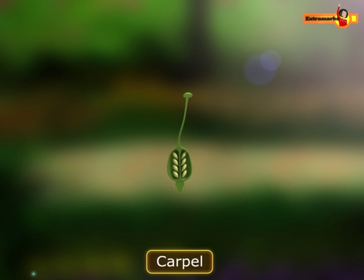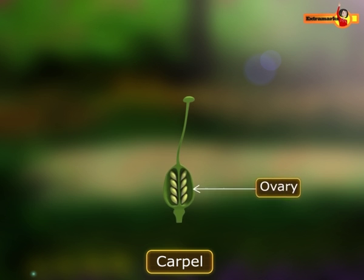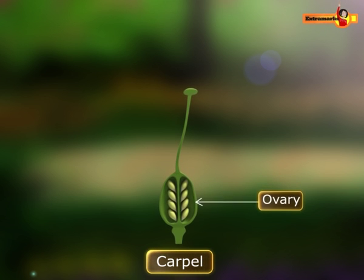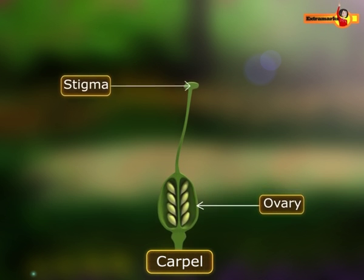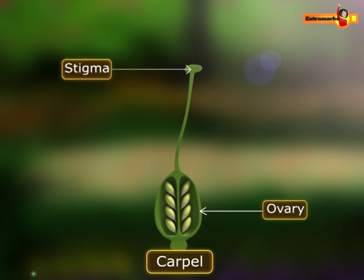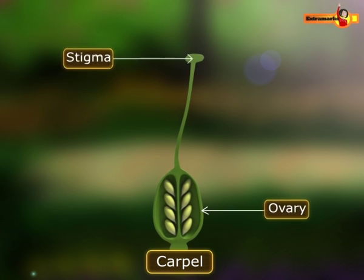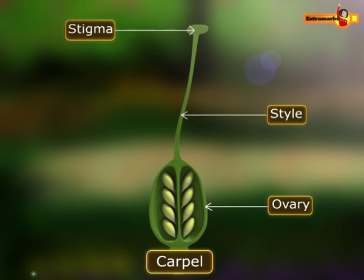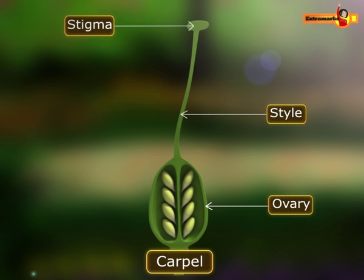The carpel is divided into a proximal ovule-bearing part known as the ovary, a distal pollen-receptive part known as the stigma, and a median sterile part called the style. The style holds the stigma, and the carpel is also known as the pistil.